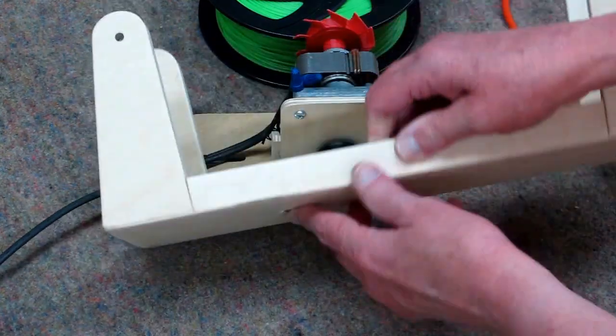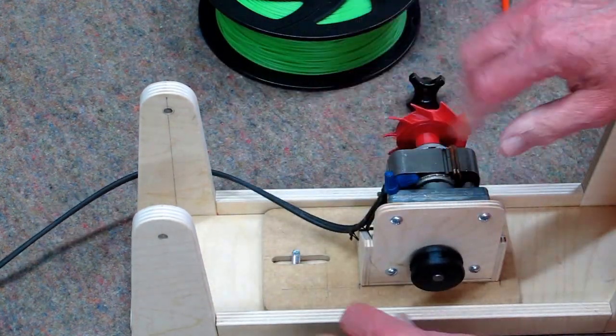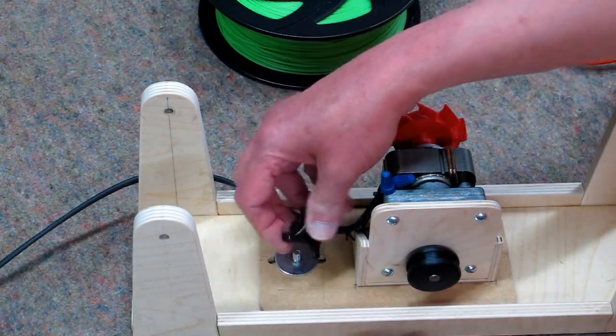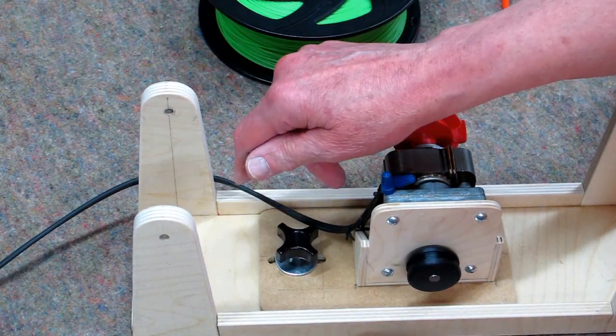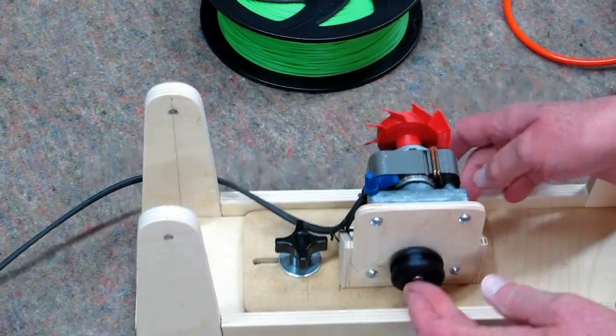So you have a carriage bolt up through the bottom. The weight of the motor keeps this end down. These sides support the motor side to side.